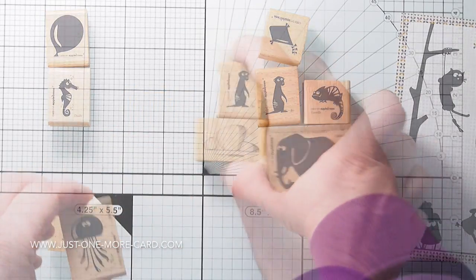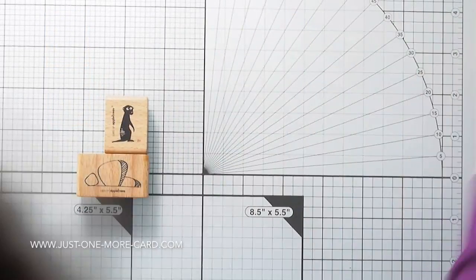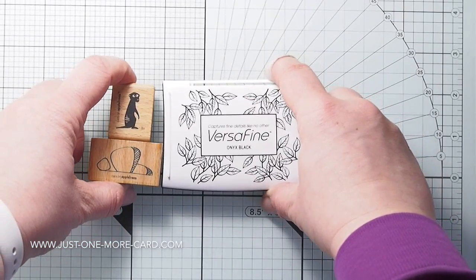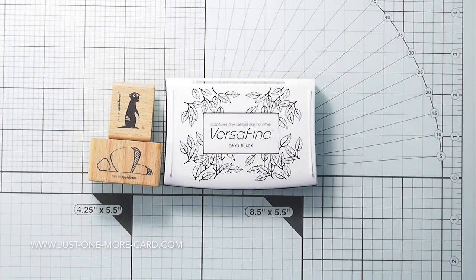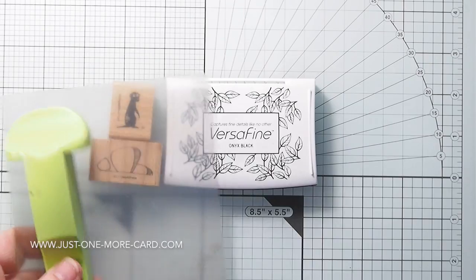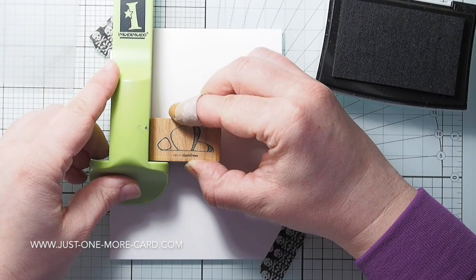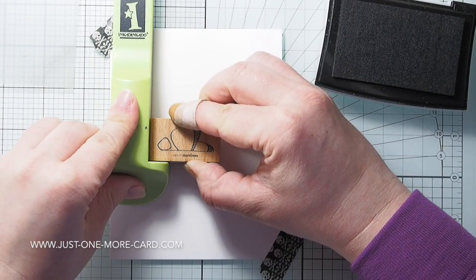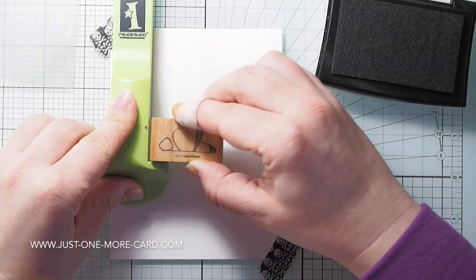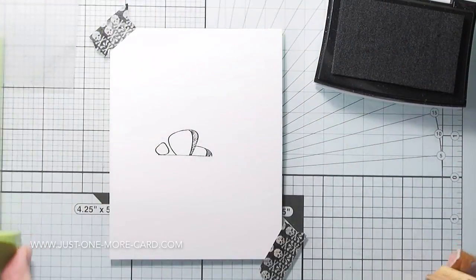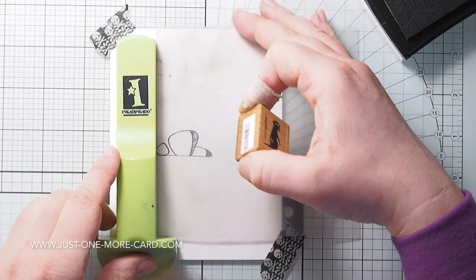Today I want to create three cards using basically these supplies. The little meerkat, the rocks and Versafine onyx black pigment ink and a stamp-a-majig just to help me position stuff. Now to start out with my first card, I already stamped down the rocks, just held the stamp in place, slid in my stamp-a-majig and double stamped it just to get the ink to be a little bit darker.